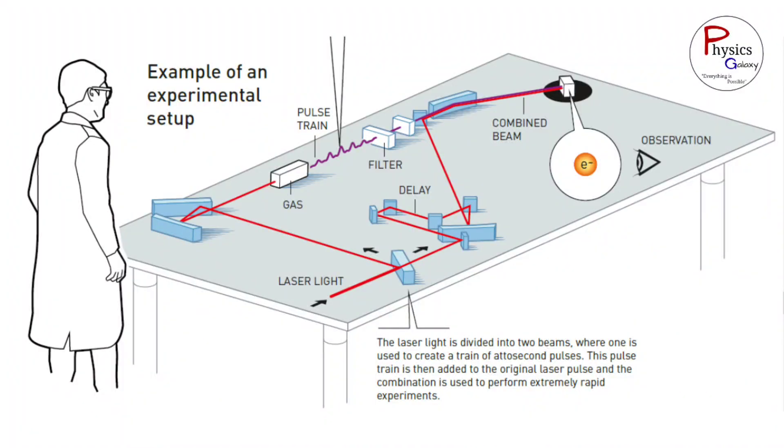This is an example of experimental setup. Here the laser light is divided into two beams where one is used to create a train of attosecond pulses. This pulse train is then added to the original laser pulse and the combination is used to perform extremely rapid experiments. This image depicts an experimental setup involving a pulse train, filter, delay, combined beam and observation point.